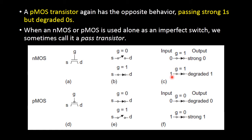The next case: we are applying the input as 1. So when we give 1 as input to the NMOS transistor, at the output we will not get 1 but we will be getting a lesser value than 1 — that means degraded 1. So NMOS transistor acts as a perfect switch in passing 0 and as an imperfect switch in passing 1.